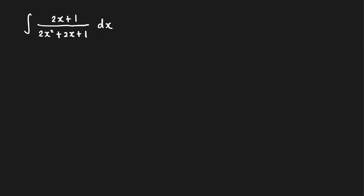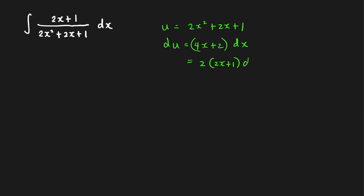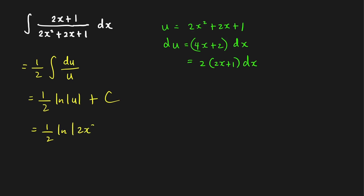Let us evaluate the final integral. This can be easily evaluated by u-substitution. Let u equal the denominator 2x² + 2x + 1, then du equals (4x + 2) dx, which is 2(2x + 1) dx. Therefore the integral equals one half times the integral of du over u, which is one half ln of the absolute value of u plus C, giving one half ln|2x² + 2x + 1| plus C.